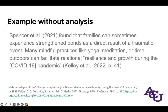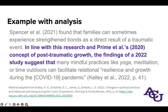Here are a couple of sentences that might appear in the writing center where something is missing. 'Spencer et al. found that families can sometimes experience strengthened bonds as a direct result of a traumatic event. Many mindful practices like yoga, meditation, or time outdoors can facilitate relational resilience and growth during the COVID-19 pandemic.' You may have felt there was no connection between these ideas or back to the writer's main argument. What's the point they're trying to make by listing these different details? Especially because the sentences place very opposite language about traumatic events and mindfulness next to each other, the reader may have trouble figuring out the relationship.